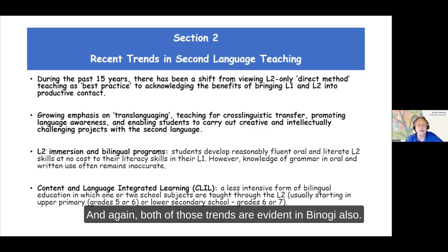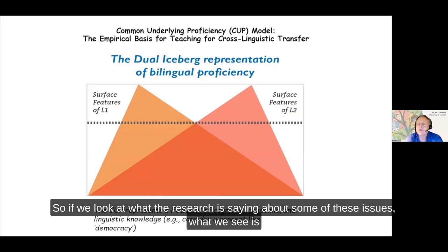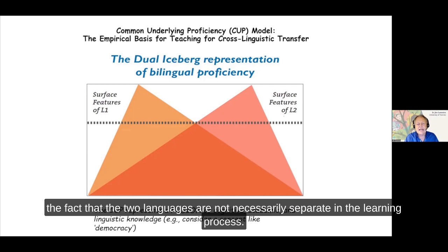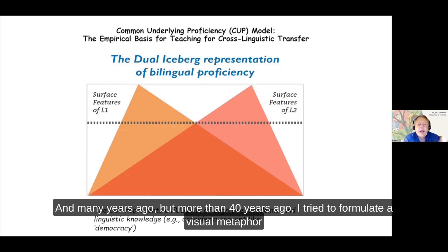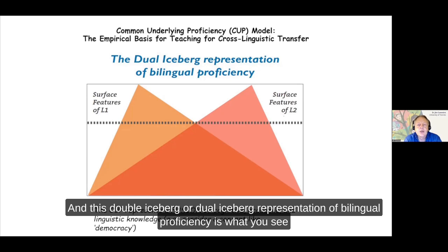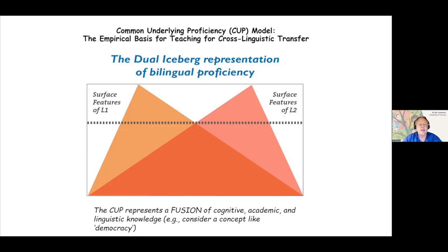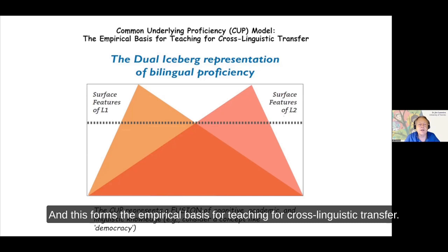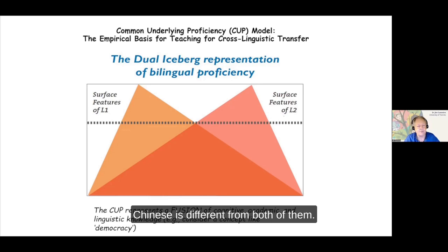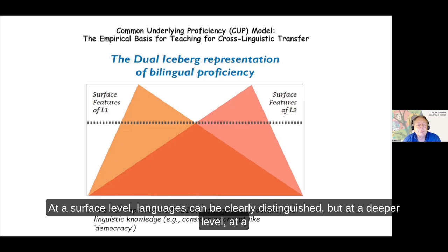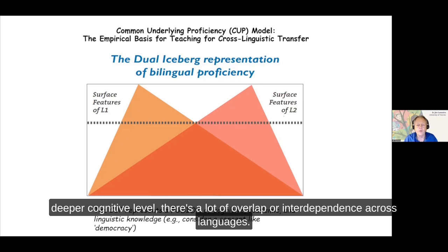What the research is saying is that the two languages are not necessarily separate in the learning process. More than 40 years ago, I tried to formulate a visual metaphor to represent that. This double iceberg or dual iceberg representation of bilingual proficiency is what you see on the screen, and I've called this a common underlying proficiency. This forms the empirical basis for teaching for cross-linguistic transfer. Even though we can clearly distinguish languages - Swedish is not the same as English, Chinese is different from both - at a deeper cognitive level, there's a lot of overlap or interdependence across languages.